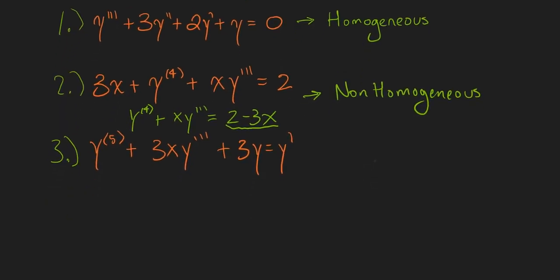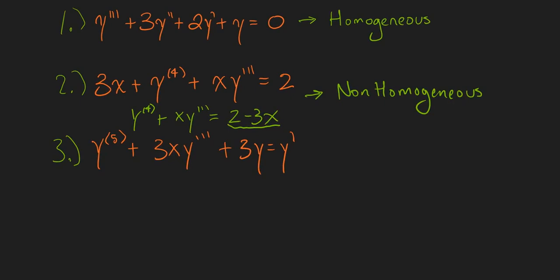Lastly, we have the fifth derivative of y plus 3x times the third derivative of y plus 3y is equal to y prime. If we rewrite this, we have y^(5) plus 3xy triple prime minus y prime plus 3y is equal to zero. Since this is equal to zero, this is homogeneous.